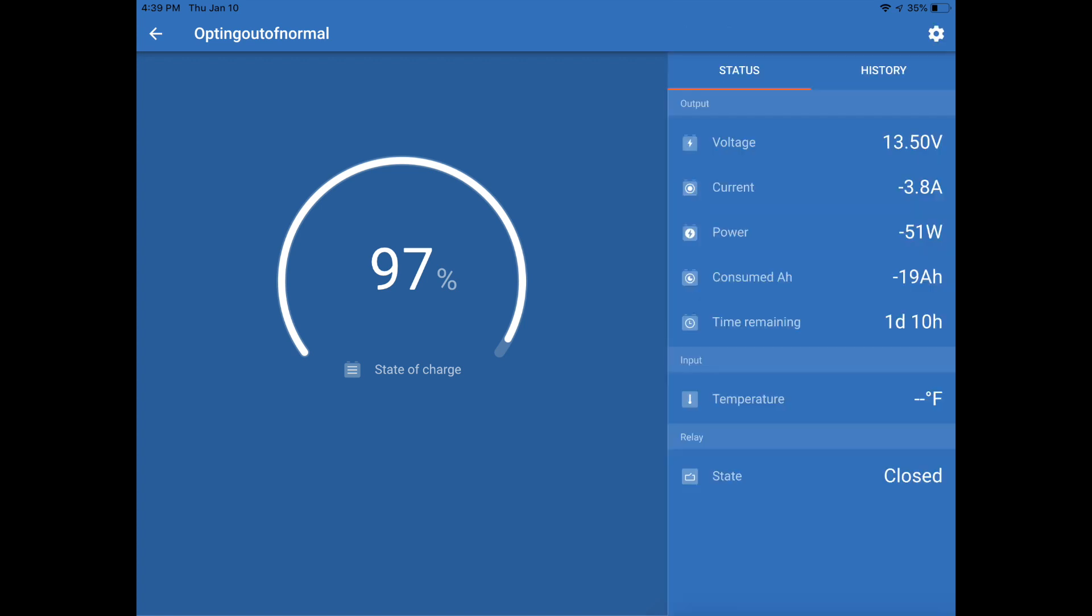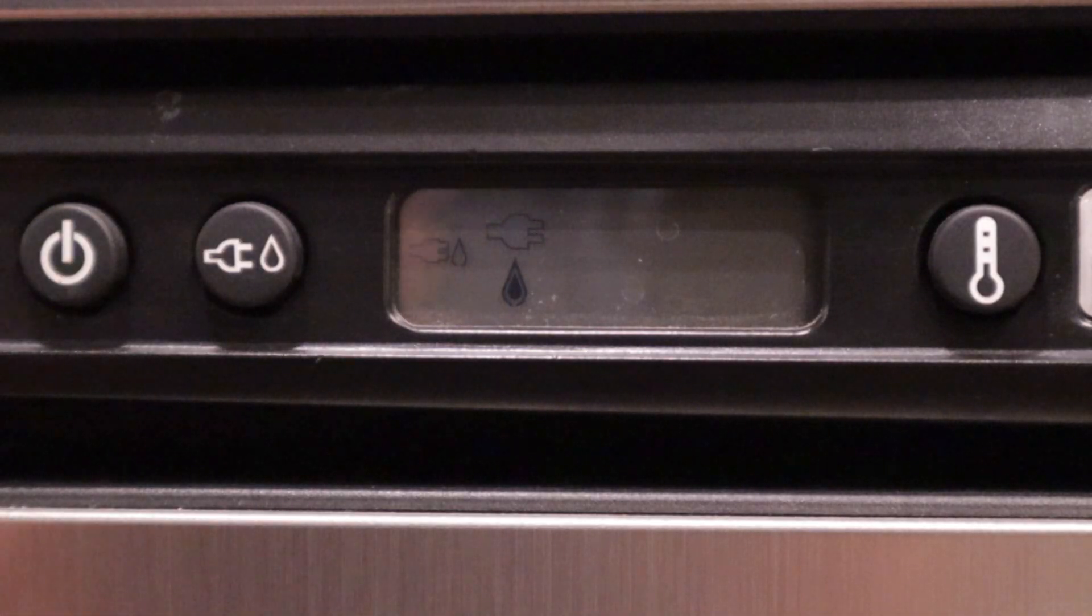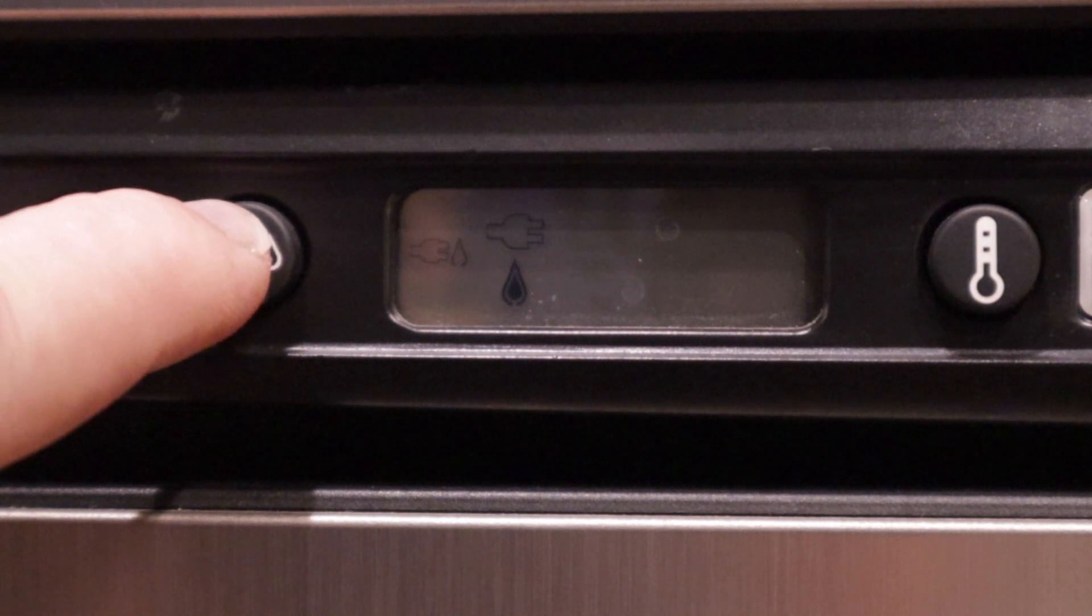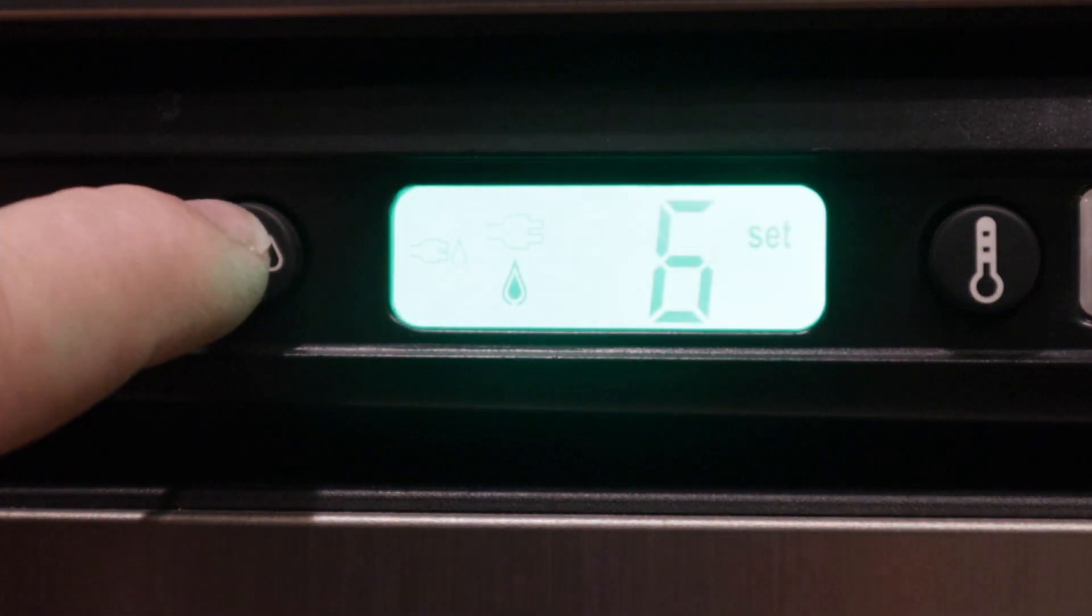Now by setting up your Victron meter like this, you're also going to notice that your time remaining is going to be based on that 80% mark that you have that control relay being set to. The final step is then to be able to go into your refrigerator and transfer it over to the automatic selection on the refrigerator itself.